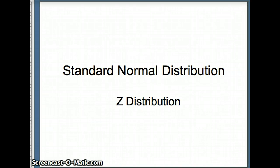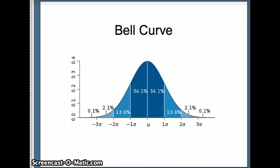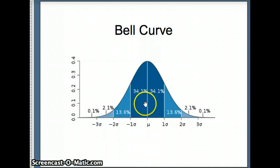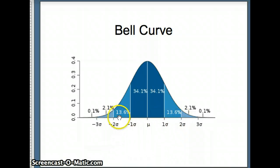This lesson will examine the standard normal distribution, also called the Z distribution. Remind ourselves of the bell curve: we have the mean right in the middle, 68% of the data within one standard deviation of the mean — notice 34 and 34 is about 68. We have 94% of the data within two standard deviations, and 99.7% of the data within three standard deviations of the mean.